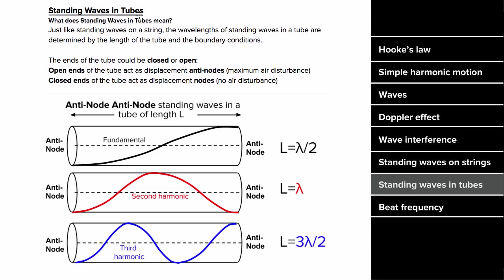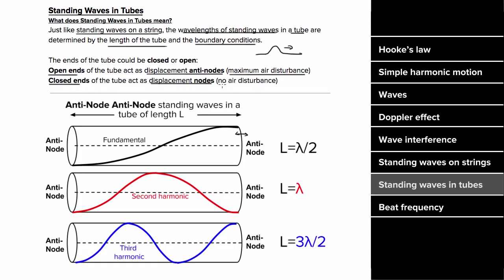For standing waves in tubes, the allowed wavelengths are determined by the tube's length and boundary conditions, but now you're creating standing waves out of sound waves. An open end acts like a displacement antinode, since the air can oscillate freely and you get maximum air disturbance. A closed end acts like a displacement node, since there is no air disturbance at a closed end.